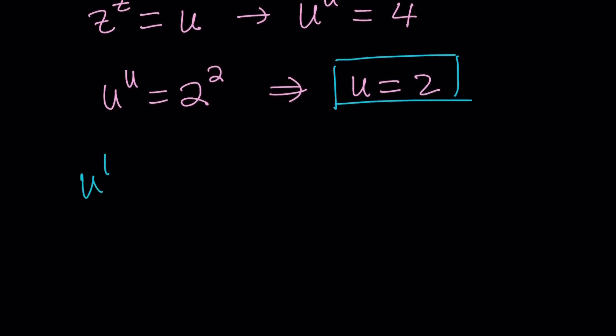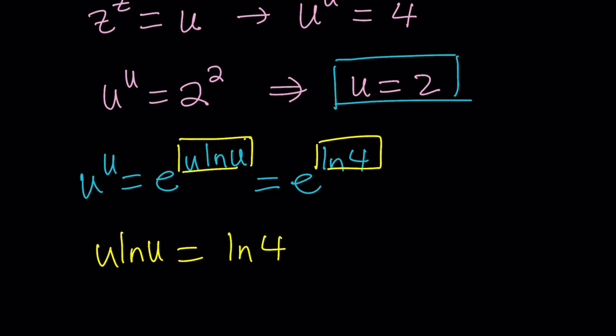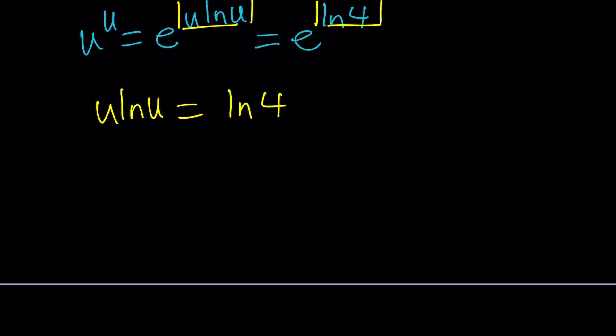You could also write it this way. u to the u can be written as e to the power u ln u, and this is equal to 4, but I can write the 4 as e to the power ln 4. So I basically exponentiated everything which is nice because from here we get something super duper nice. Instead of saying u to the u equals 4, now we're going to say this equals ln 4.